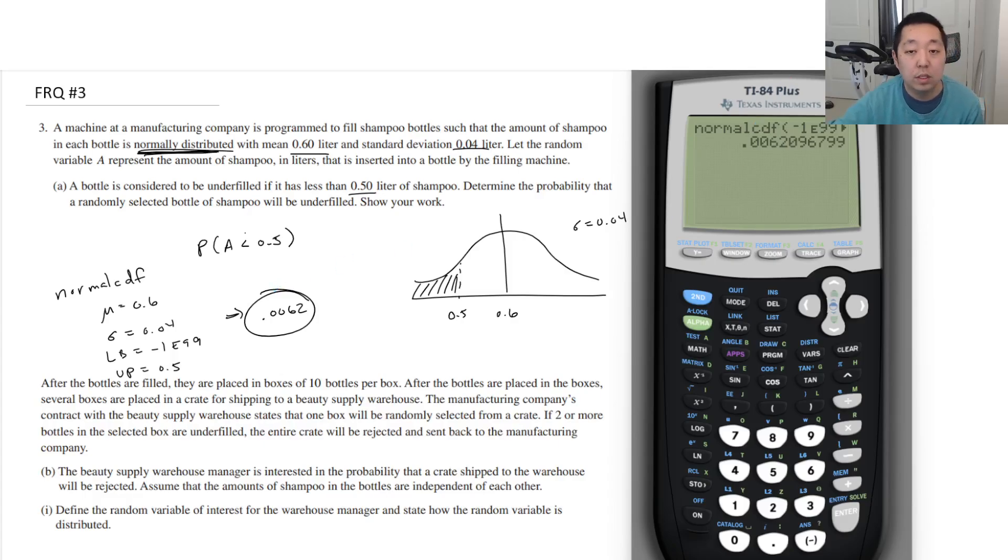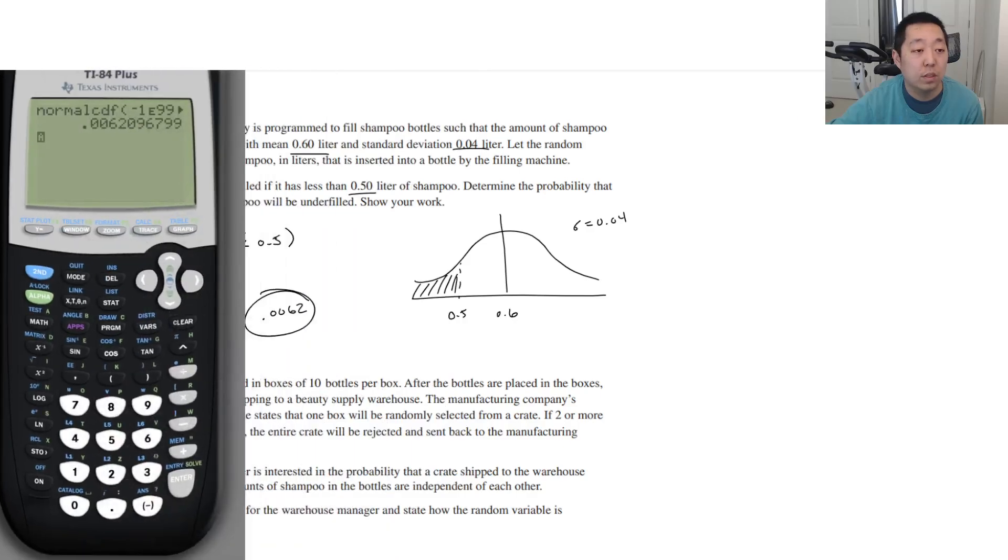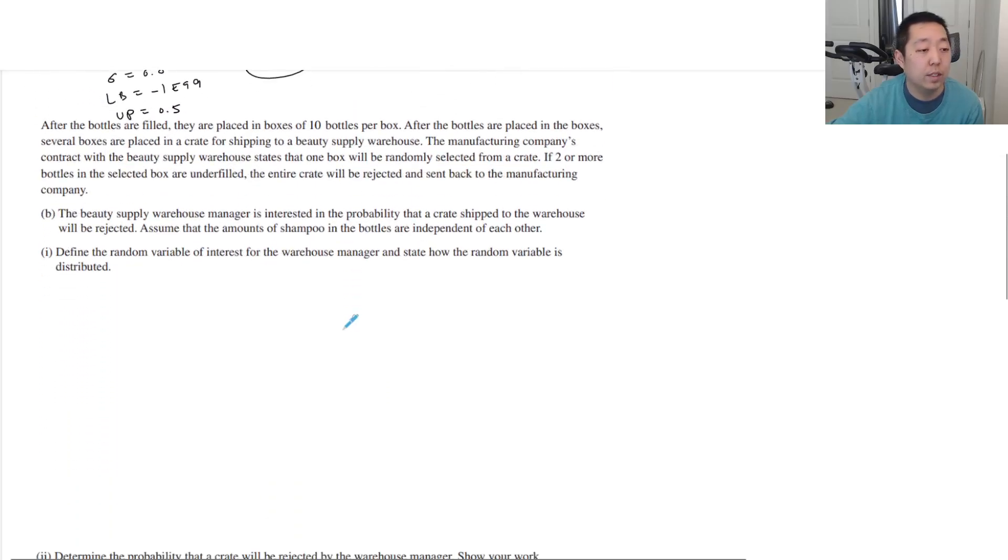After the bottles are filled and placed in boxes of 10 bottles per box, several boxes are placed in a crate for shipping to a beauty supply warehouse. The manufacturing company's contract with the beauty supply warehouse states that one box will be randomly selected from a crate. If two or more bottles in the selected box are underfilled, the entire crate will be rejected and sent back to the manufacturing company. The beauty supply warehouse manager wants the probability that a crate shipped to the warehouse will be rejected. Assume that the amounts of shampoo in the bottles are independent of each other.